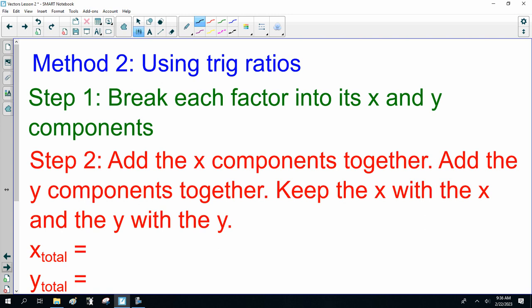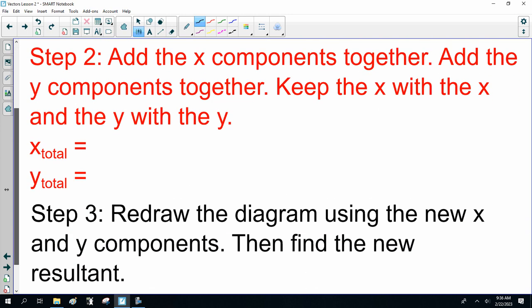Step 1, break each vector into its x and y components. Step 2, add the x components together, add the y components together. Keep the x with the x and the y with the y. You get an x total and a y total. Step 3, redraw the diagram using the new x and y components, then find the new resultant.